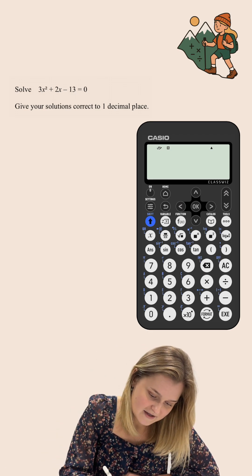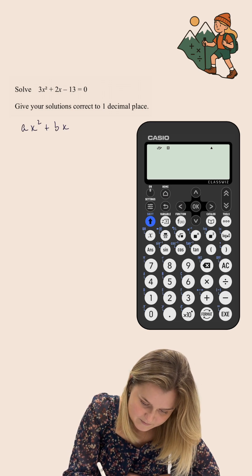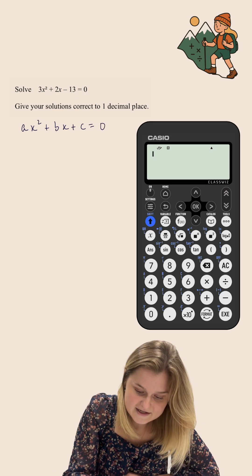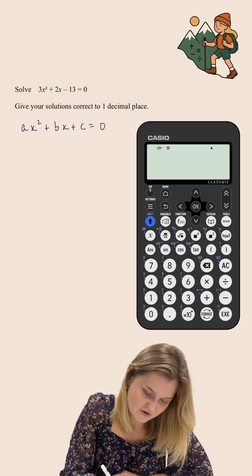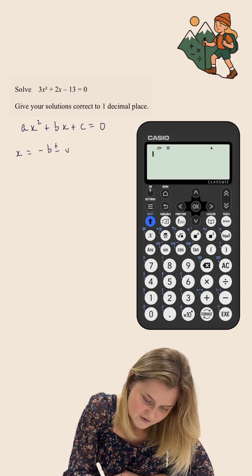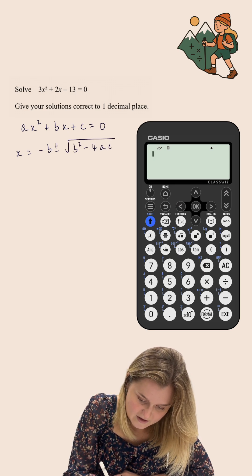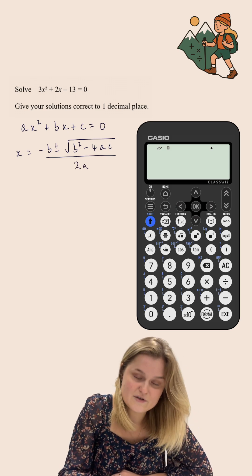The quadratic formula states that if we have a quadratic of the form ax² + bx + c = 0, then the solutions to that quadratic will always be x = (-b ± √(b² - 4ac)) / 2a.